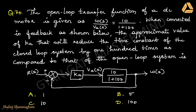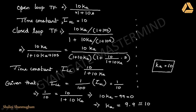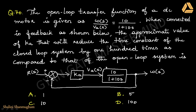Coming to the 70th question: the open loop transfer function of a DC motor is given as ω(s)/V(s) = 10/(1 + 10s). When connected in feedback as shown, find the appropriate value of Ka that will reduce the time constant of the closed loop system by 100 times compared to that of the open loop system. The output is ω(s) and input is R(s).